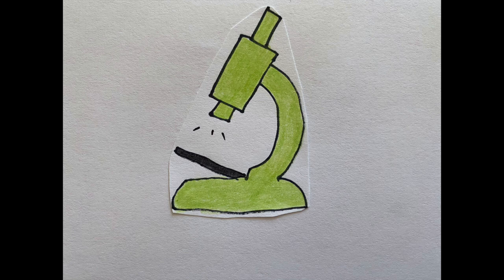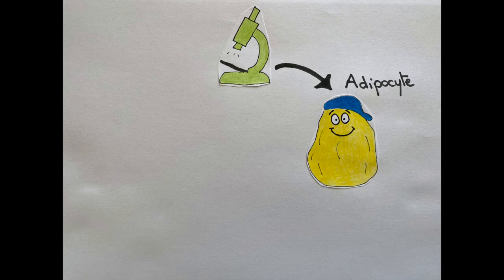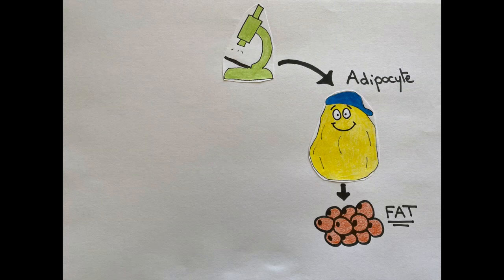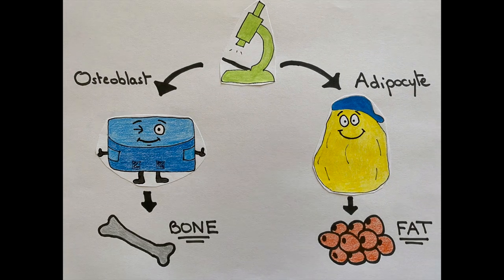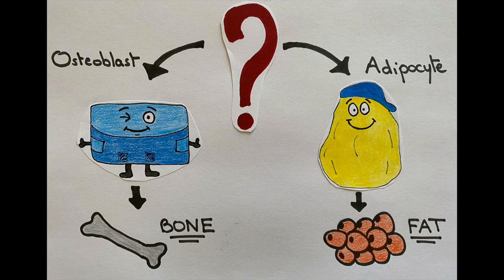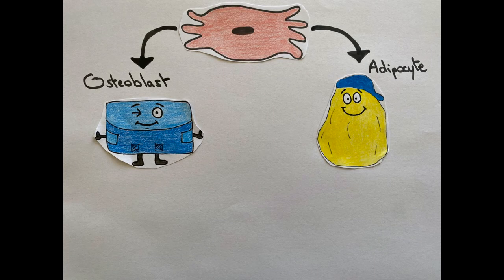At the cellular level, adipocytes make up the fat tissue and osteoblasts build bone. So what is the connection between adipocytes and osteoblasts? Both cell types are derived from a common stem cell called a mesenchymal stem cell.